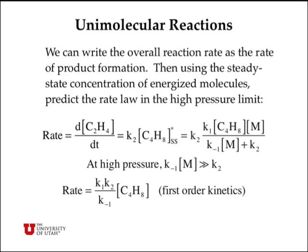We write the overall reaction as the change in ethylene concentration, which would be K2 times the activated molecule concentration, giving us a complicated expression. At high pressure, if we look at the denominator of this expression, the term that scales with pressure is going to be large and the K2 term will be relatively small. So if we ignore K2, the M's cancel, and we can write a simple expression predicting first-order kinetics in cyclobutane concentration.